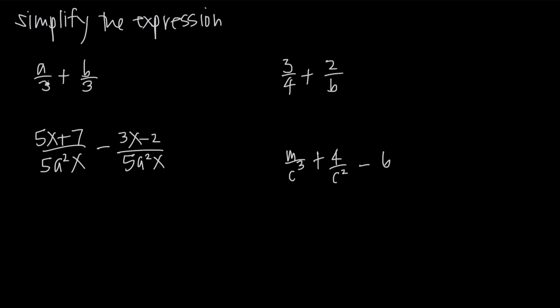In this first example, we have a/3 plus b/3. Just like with regular fractions, the first thing we need to do is find a common denominator. In this case, we already have one. The denominator of both fractions is 3, so we can combine the fractions. We just can't combine a and b because they're not like terms. So the result is just (a+b)/3. Because a and b are not like terms, we can't simplify any further, but that'll be our answer.